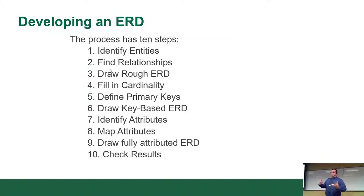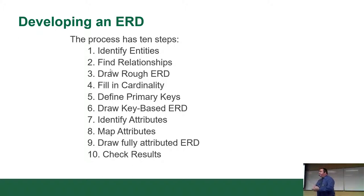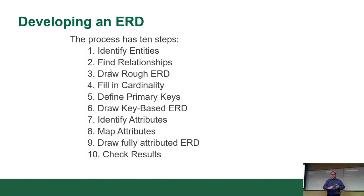There are defined steps when you identify entities and create ERDs: identify the entities, find relationships, draw a rough ERD, fill in cardinality, define primary keys — at which point you're moving into logical territory — draw key-based ERDs, identify the attributes, map the attributes, draw the fully-attributed ERD, which is called a logical diagram, and then check the results to make sure everything makes sense.